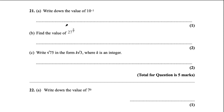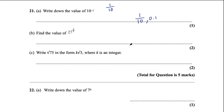Question 21a says write down the value of 10 to the minus 1. Anytime you have a negative exponent, that's like writing 1 over that thing — 1 over 10 to the power 1 is just 10 — so your answer here could be 1 over 10 or 0.1. Either of those is a tenth, so either will get you that one mark.